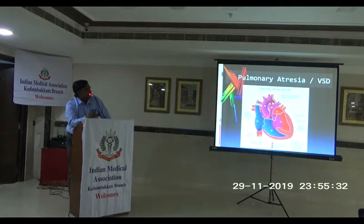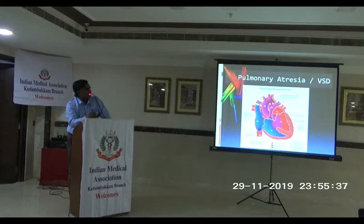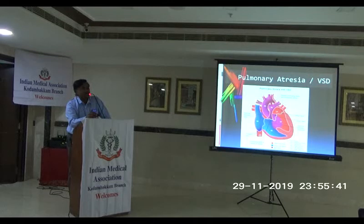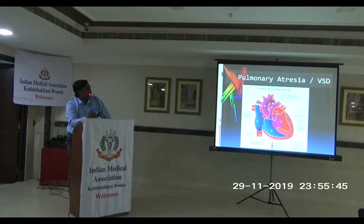This is pulmonary atresia with VSD — no connection between the RV and the PA. This is valvular pulmonary atresia with intact branch pulmonary arteries. For this type we may go to ductal stenting initially, and later work up toward complete repair.